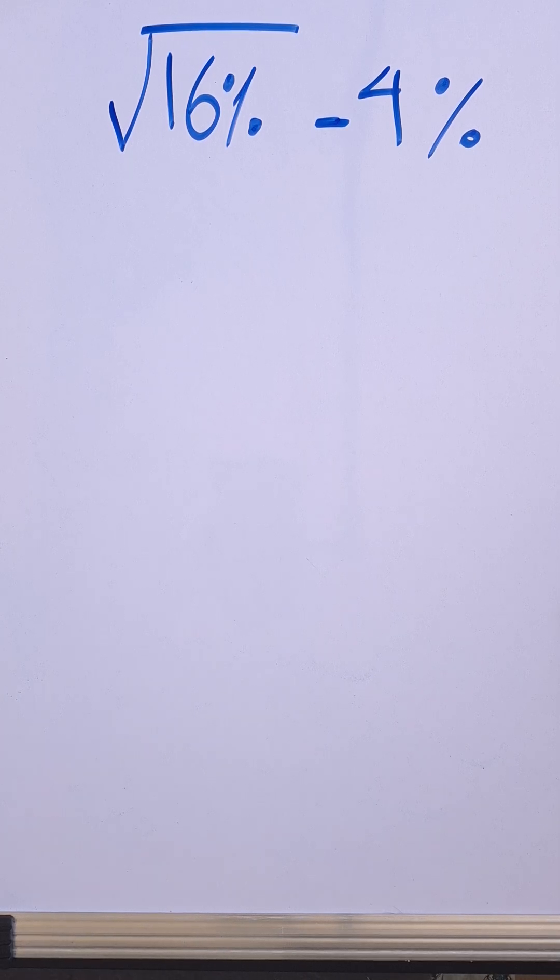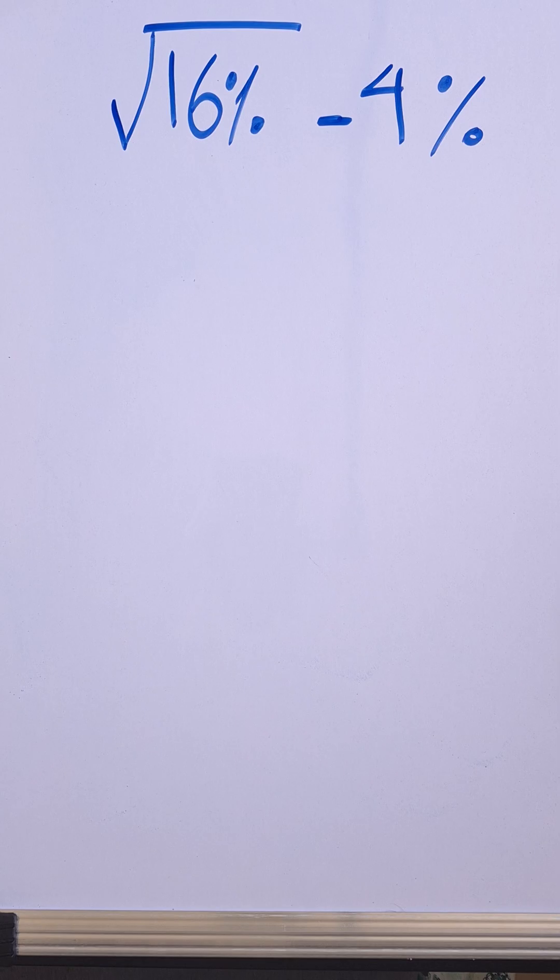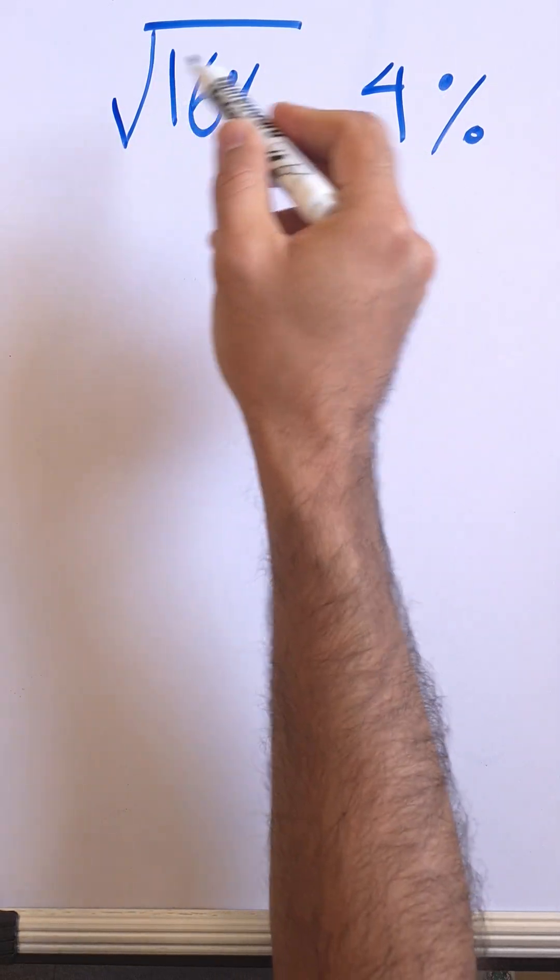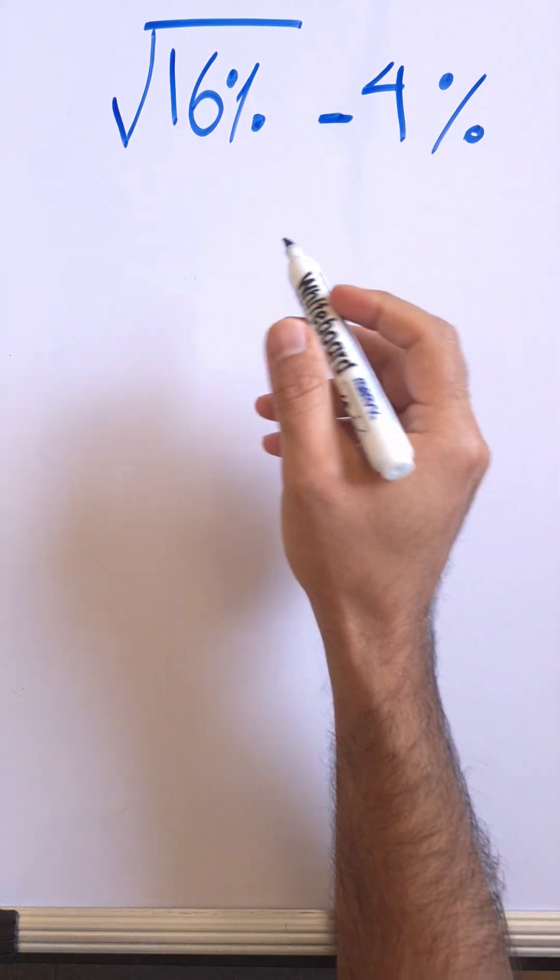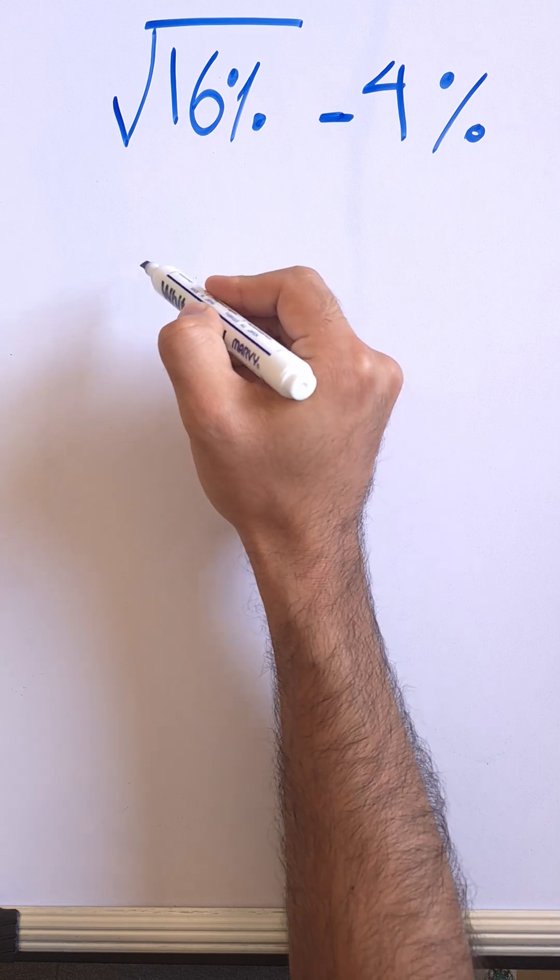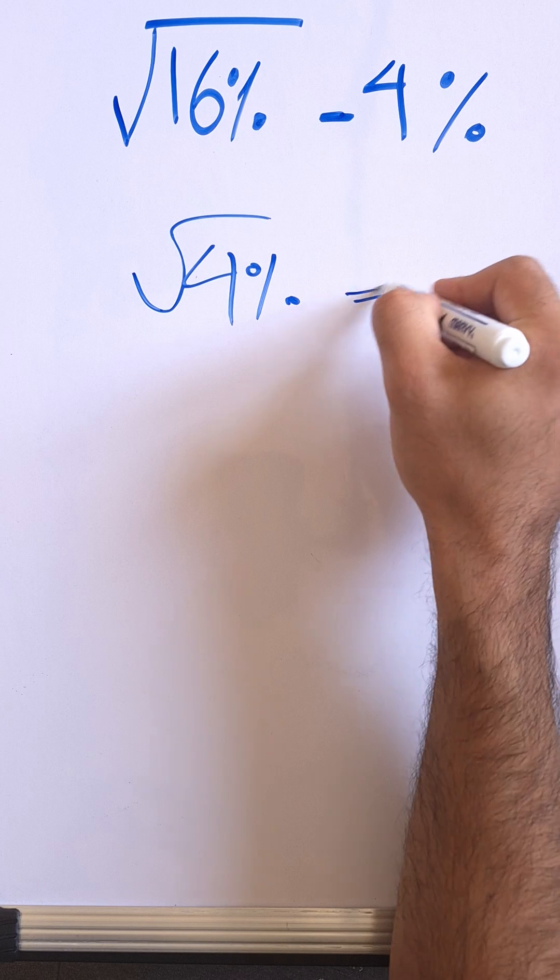So root 16% minus 4%, what is the value? Just calculate it and work it out. Obviously you can't, we have a radical sign and just a percent under the radical sign. So obviously you can't say root 16% is root 4% and 4% minus 4% equals zero. This is wrong.